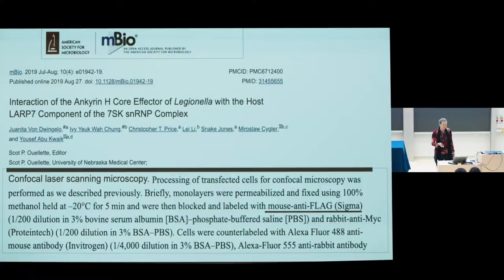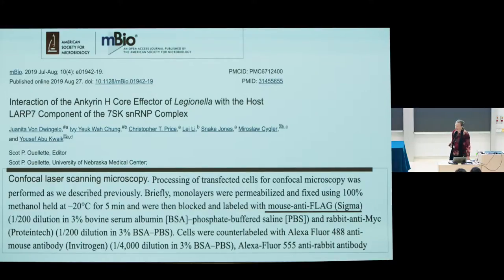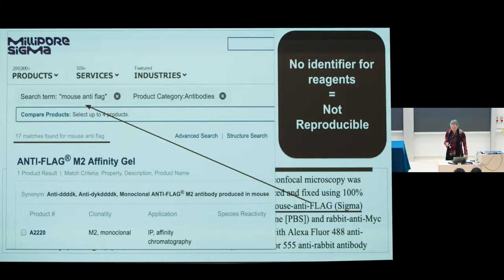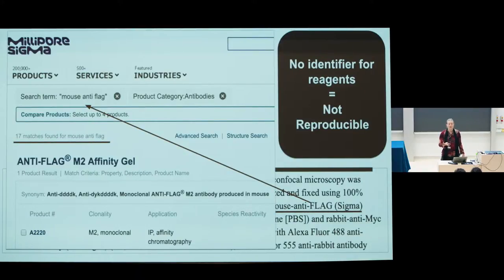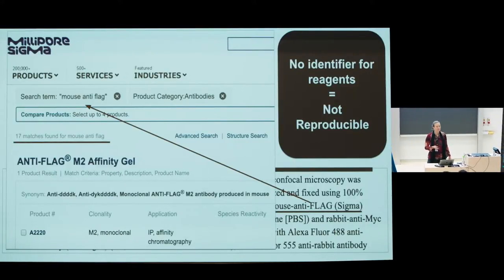This is actually a paper from 2019, from last week, and I didn't have to look very hard for this example. It's a lovely paper in a good journal, and there's a mouse anti-flag antibody from Sigma Aldrich. What if I were trying to reproduce this paper and I tried to find this antibody? I went to the Sigma website and put in 'mouse anti-flag' and came up with exactly 17 antibodies. If it doesn't have an identifier, is it reproducible? No.